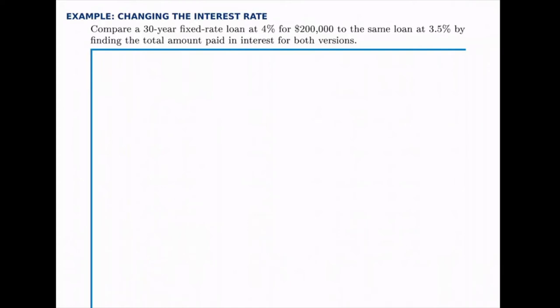In this example we're going to compare two loans at slightly different interest rates for the same principal amount and the same length of time. All that's going to change is the interest rate from 4% to 3.5%. The way we're going to compare them is by finding the total amount paid in interest for both versions of the loan.